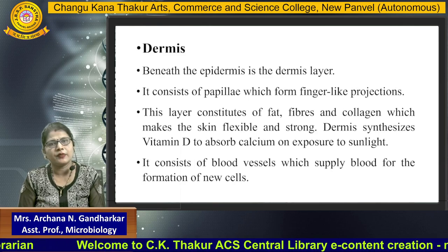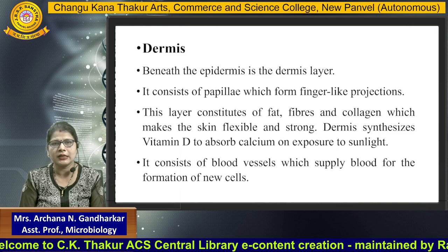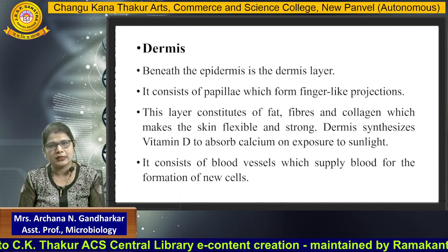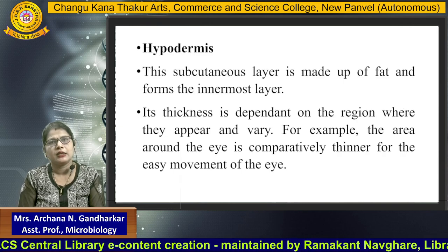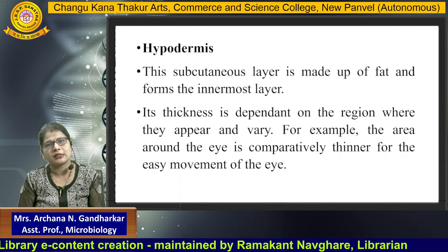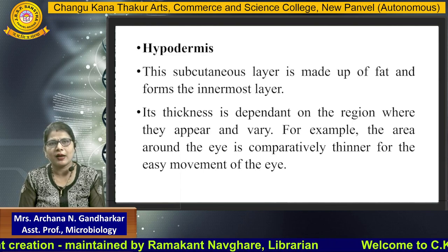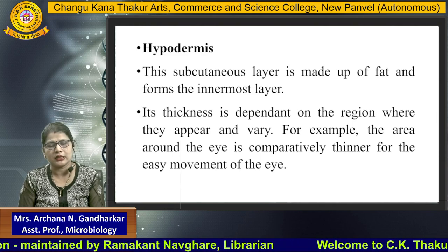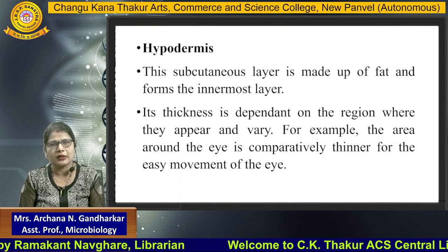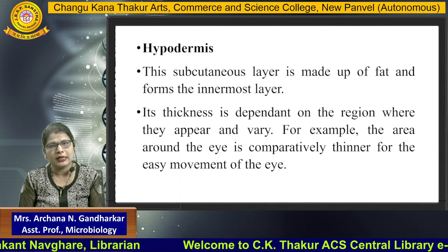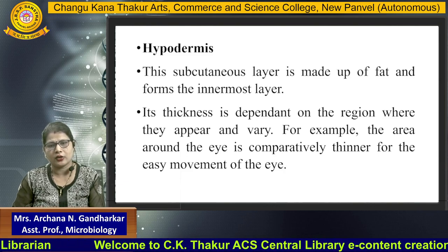The dermis synthesizes vitamin D which helps absorb calcium on exposure to sunlight. It consists of blood vessels which supply blood for the formation of new cells. The third layer, the innermost layer, is called the hypodermis. This is the subcutaneous layer which is made up of fat and forms the innermost layer. Its thickness depends upon the region where it appears and varies — for example, the area around the eye is comparatively thinner for the easy movement of the eye.